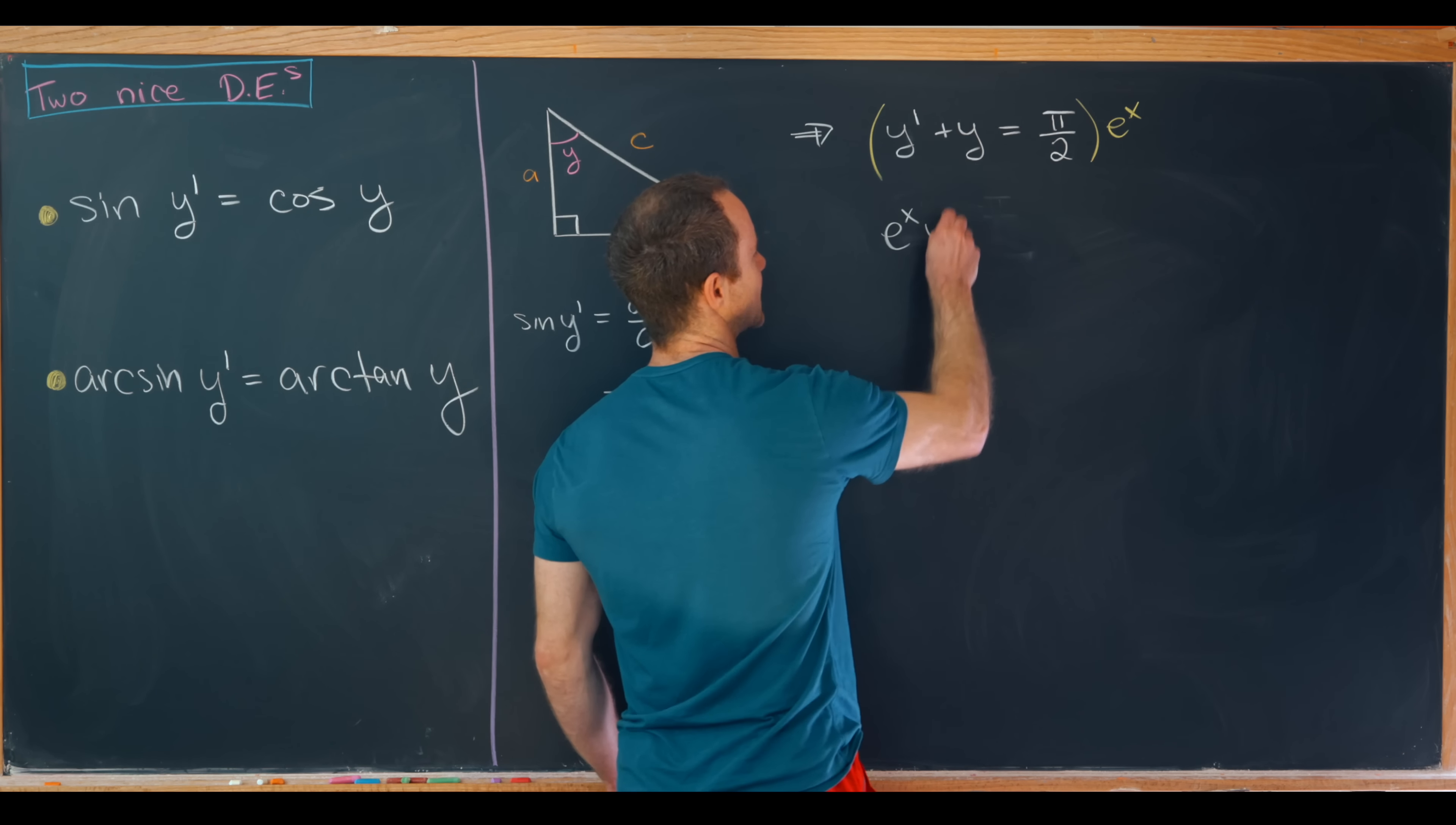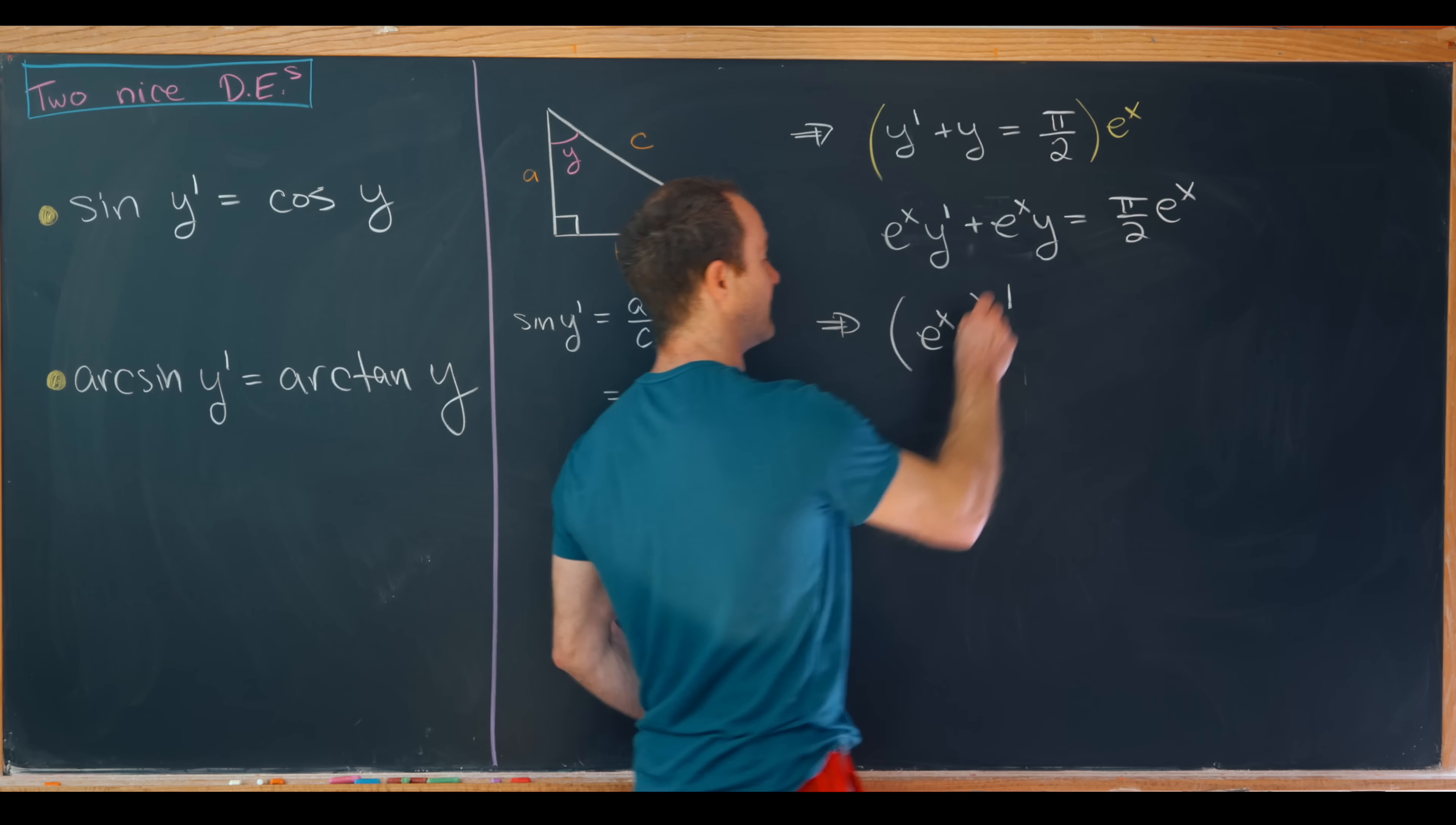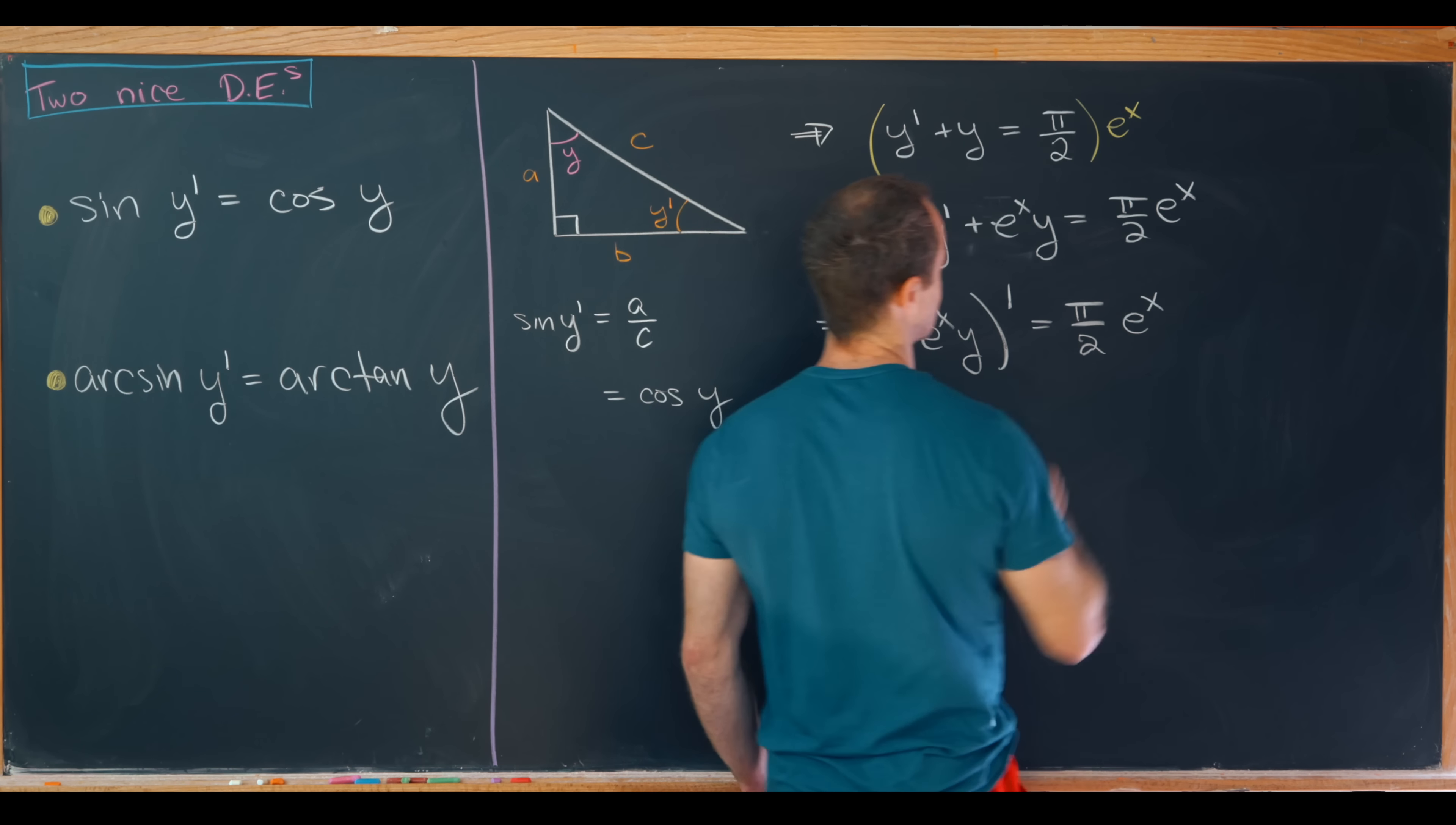Then we'll have e to the x times y prime plus e to the x times y equals pi over 2 times e to the x. But then we can see that this left hand side is in fact the derivative of e to the x times y. We're kind of reversing the product rule there. On the right hand side we still have pi over 2 times e to the x.